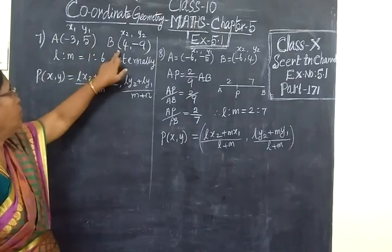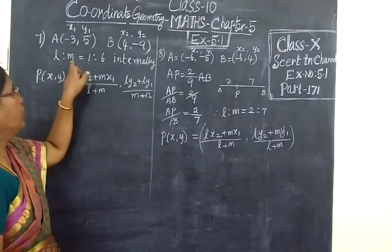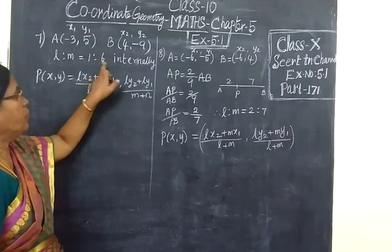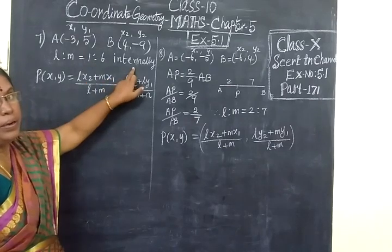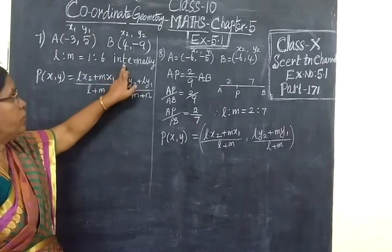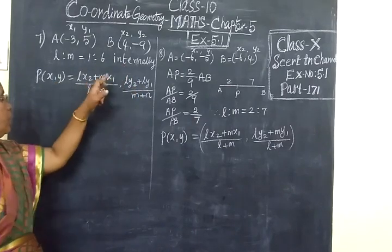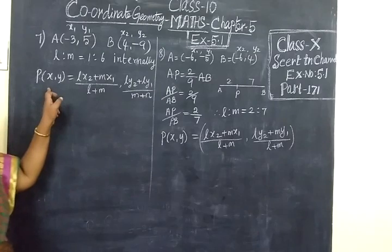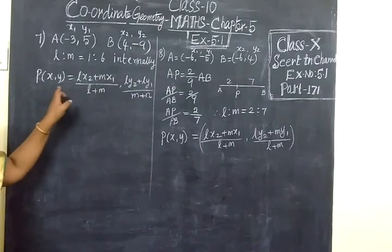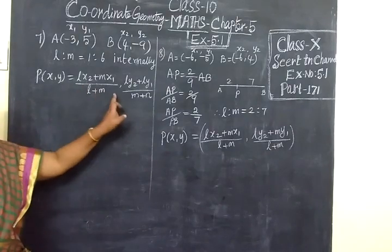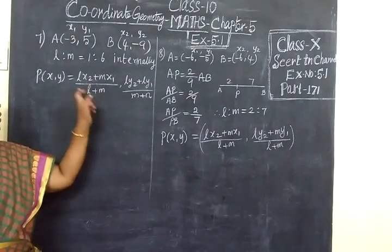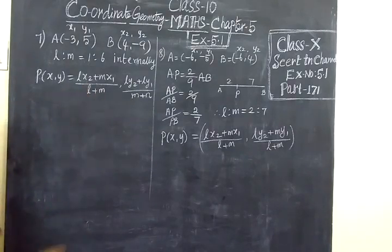A given, B given. The point divides internally, not externally — internally. Internally maintained. X and formula: P of X equal to this. Now we will update.